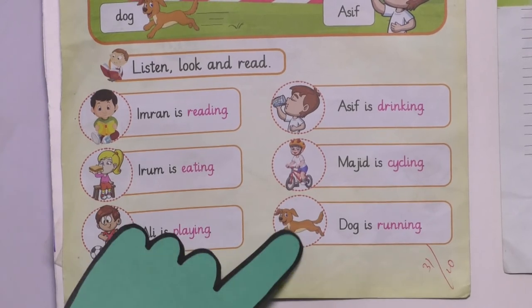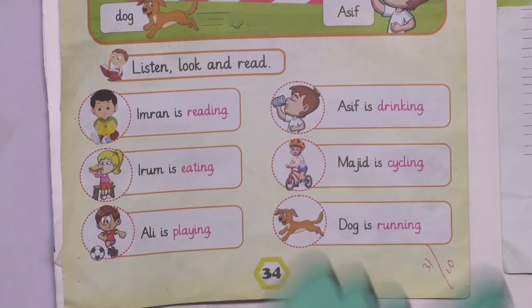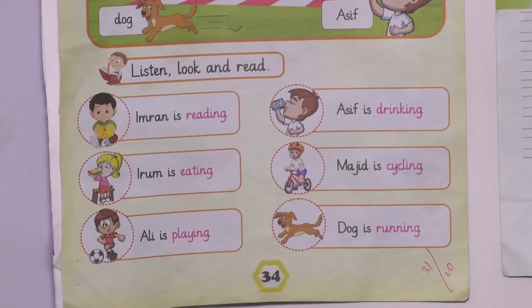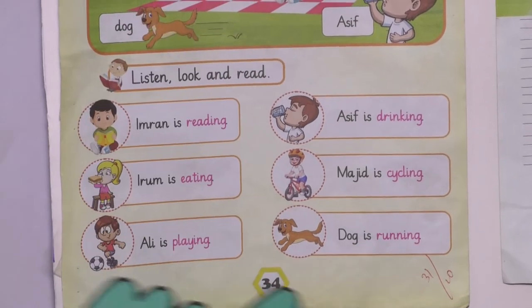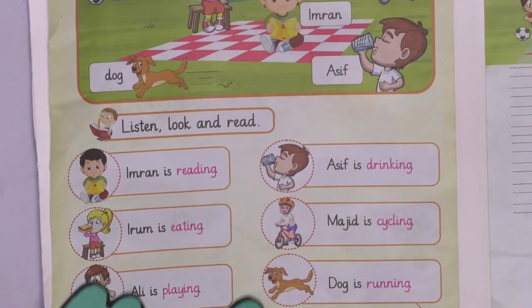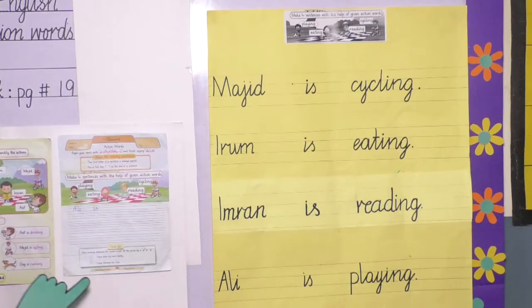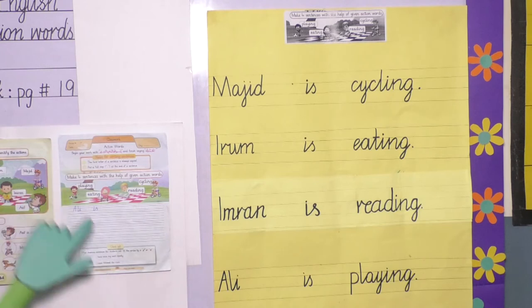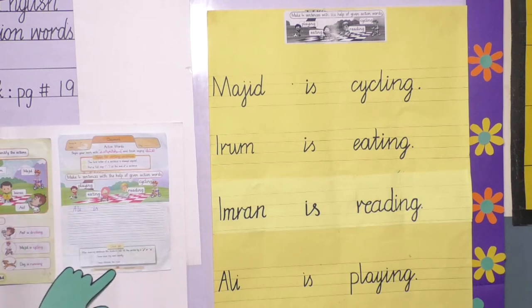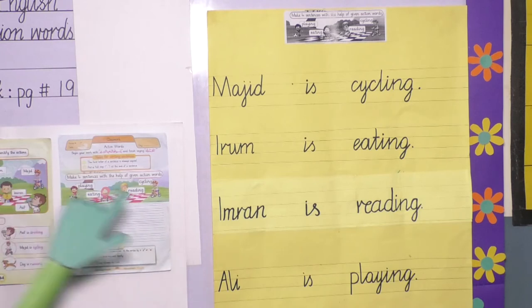What is the dog doing? The dog is running. Students, read these sentences 3 and 4 times. Open page number 19 and start your work.